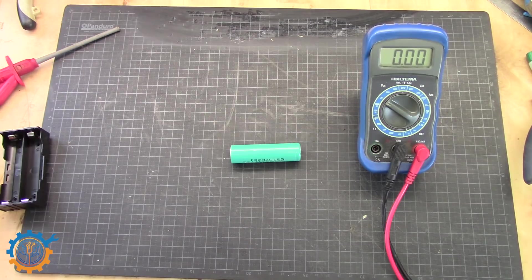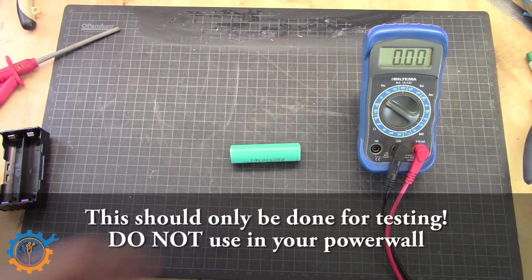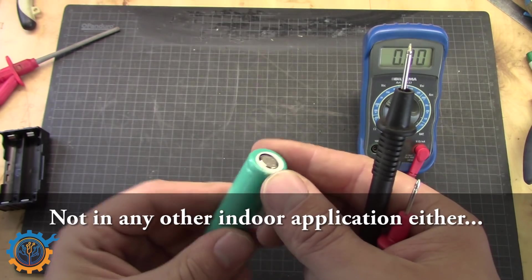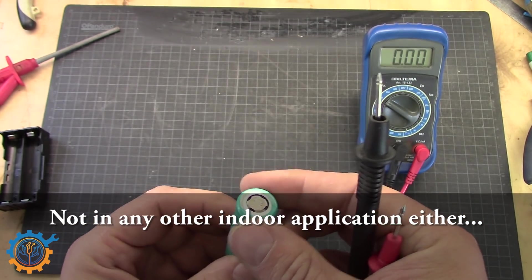So if we go back and see what we can do about cells that do not take charge at all. Actually you should not do this. Inside here on the positive side you have the CID. That's the pressurized protection unit. If the cell builds up pressure inside.